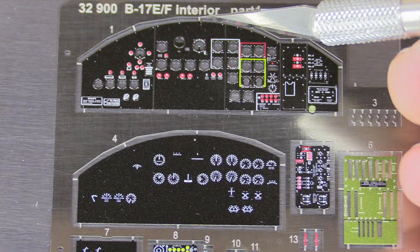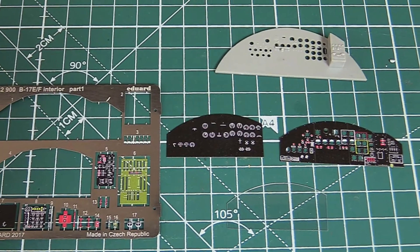The first step in installing photo etch parts is to remove the parts from the carrier sheet by cutting the attachment points.